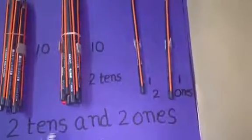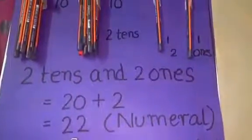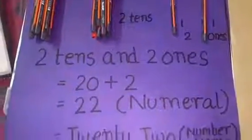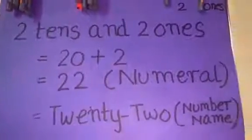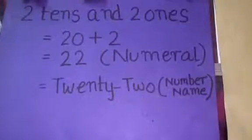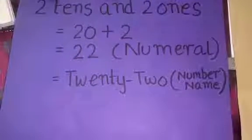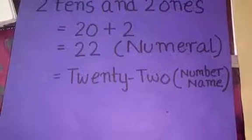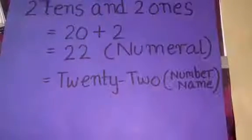2 tens and 2 ones, when added together, gives me the numeral 22. So, did you see how easy it is to understand the concept of tens and ones. You can try with many similar objects from your surroundings by grouping them in tens.